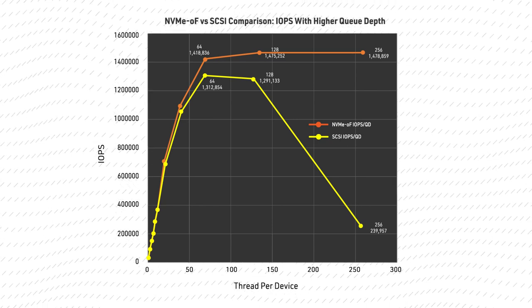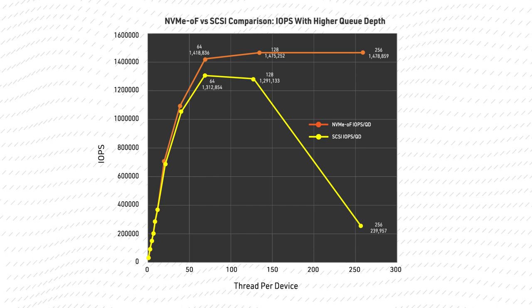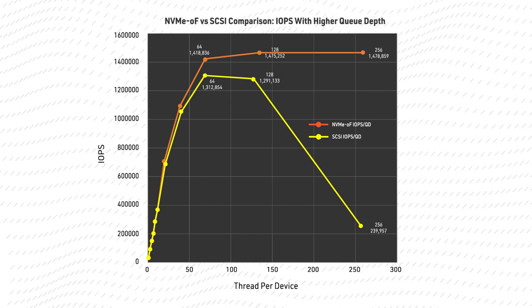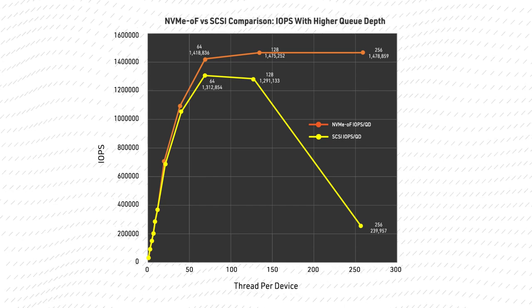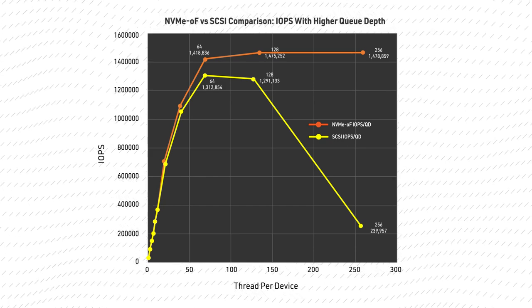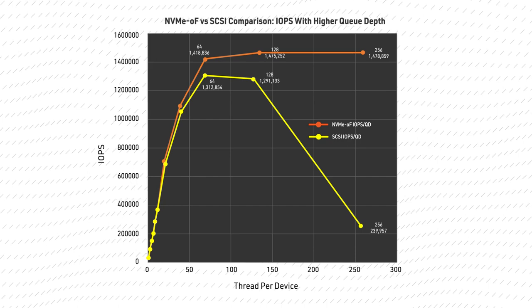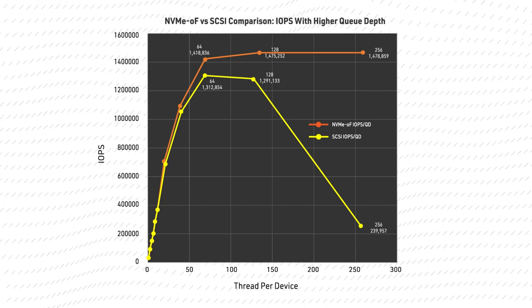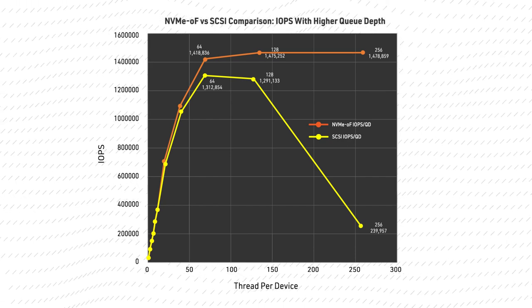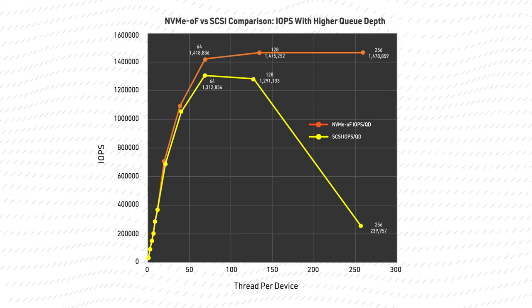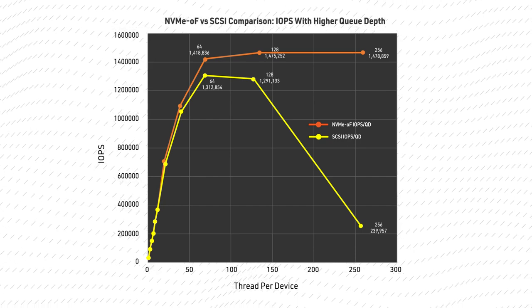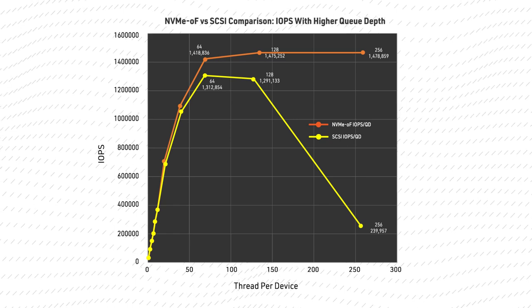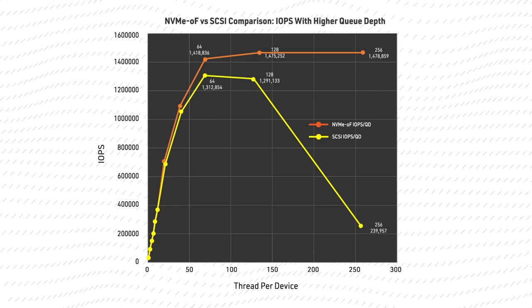In the NVMe over fiber channel configuration, no decline in IOPS occurred because the NVMe protocol includes multiple deep queues for each device, which allowed IOPS to continue rising to the highest queue depth of 256.